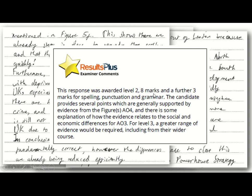That conclusion is terrible — it's only four lines long, it doesn't refer to any specific evidence, and it doesn't really justify itself. But this response actually got eight marks out of 12. I don't think this response used the resources particularly well — it mentioned maybe three of the four resources only very slightly, though it clearly used its own knowledge well. If you follow my structure you will be far better off, because you'll incorporate far more detail more regularly. For level three marks — nine to twelve — a greater range of evidence would be required, including from their wider course. This answer waffles a bit, but if you follow my structure you can produce far better than this.